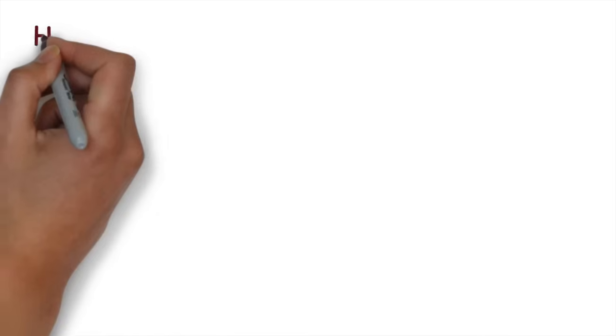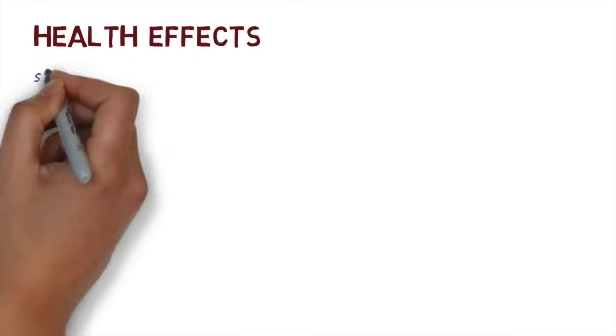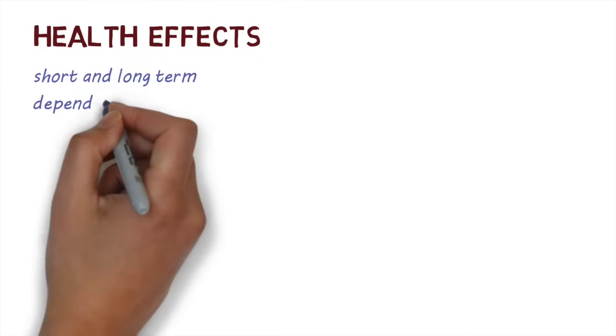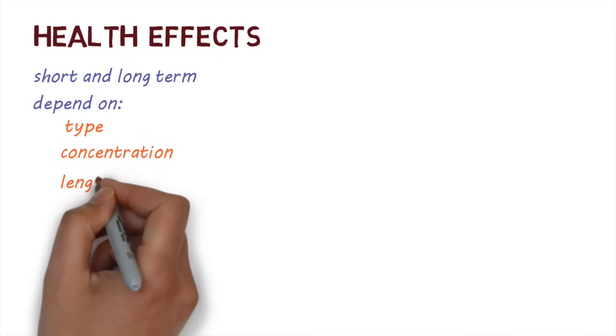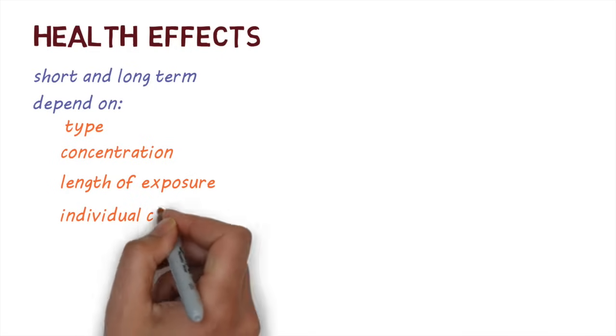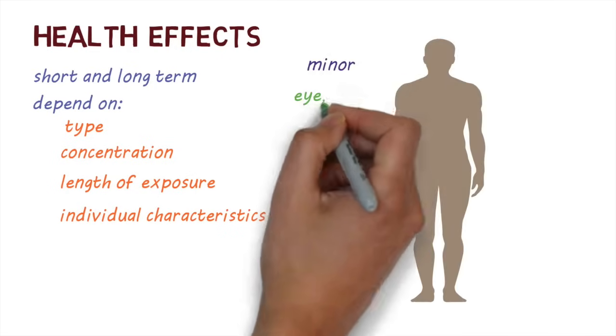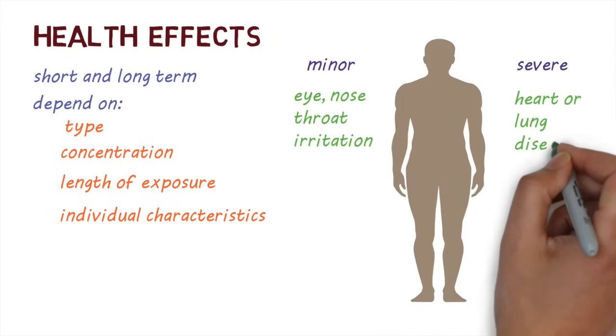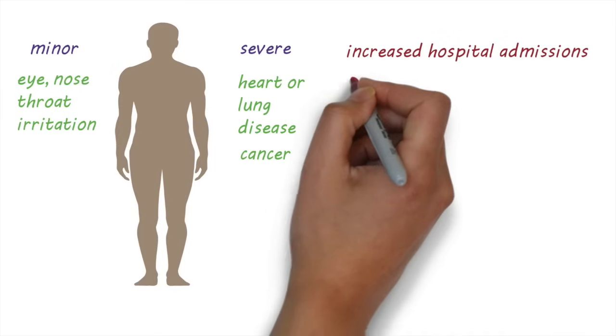So what are the health effects? Exposure to air pollution can result in a wide range of short- and long-term health effects. The health effect will depend on factors like the type of pollutant, concentration, length of exposure, and individual characteristics of the person exposed to it. It can range from minor symptoms like irritation of the eyes, nose, and throat to more severe conditions like heart and lung disease or cancer. It can also lead to increased hospital admissions and an increase in death rates.